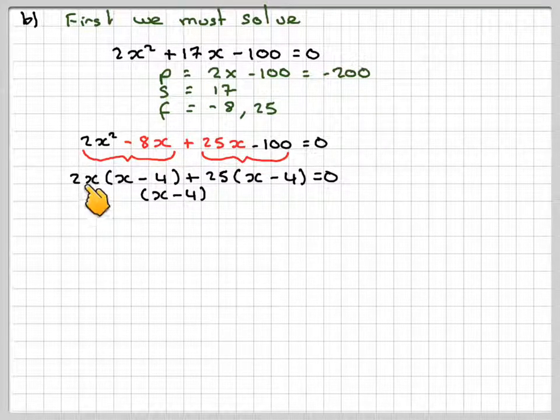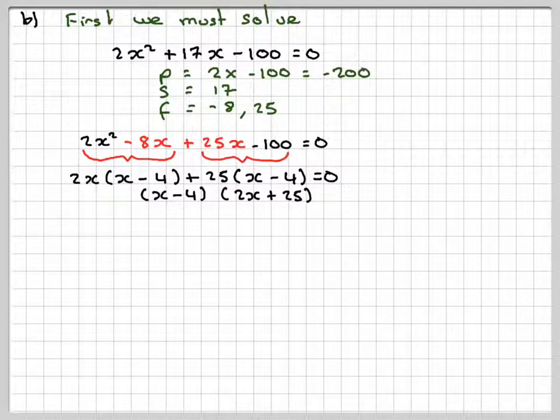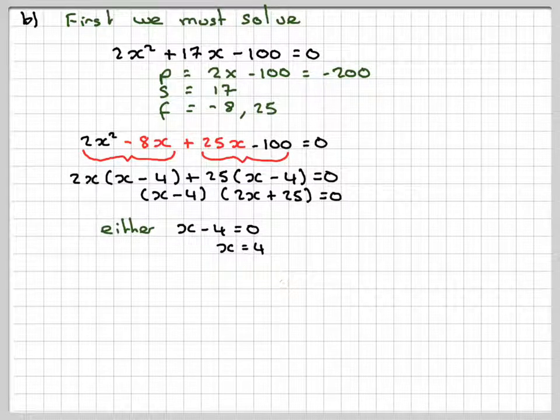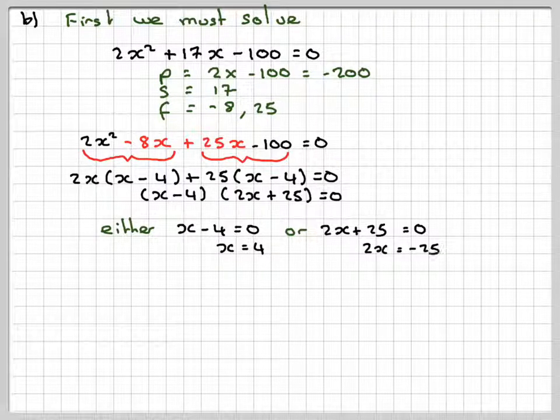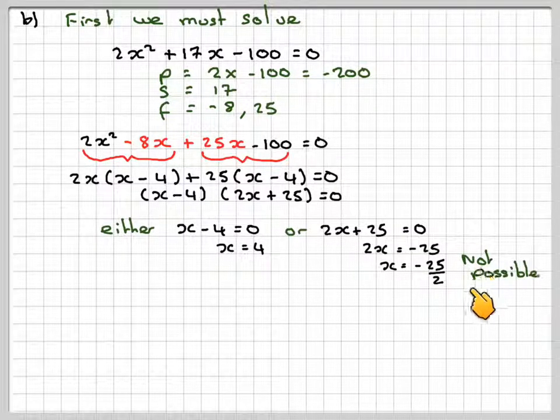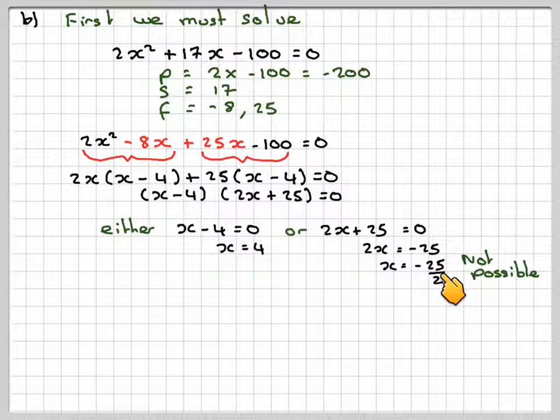So, we get X minus 4, and we're left with 2X plus 25 is equal to 0. Either X minus 4 is equal to 0, which gives X is 4 centimetres. That's a reasonable answer. Or 2X plus 25 is equal to 0, which means 2X is minus 25, X is minus 25 over 2. This is not possible in our situation because we can't have a negative length.